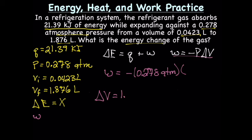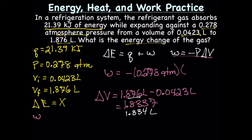We have work equals negative our pressure, which is 0.278 atm, times delta V. Remember delta V is volume final minus volume initial, so I guess we should do that. Delta V equals volume final minus volume initial. That gives us a delta V of 1.8337. We've got to check our sig figs, or since we're doing subtraction, it's our number of decimal places. We have three and four, so it looks like our delta V is going to be 1.834 liters.